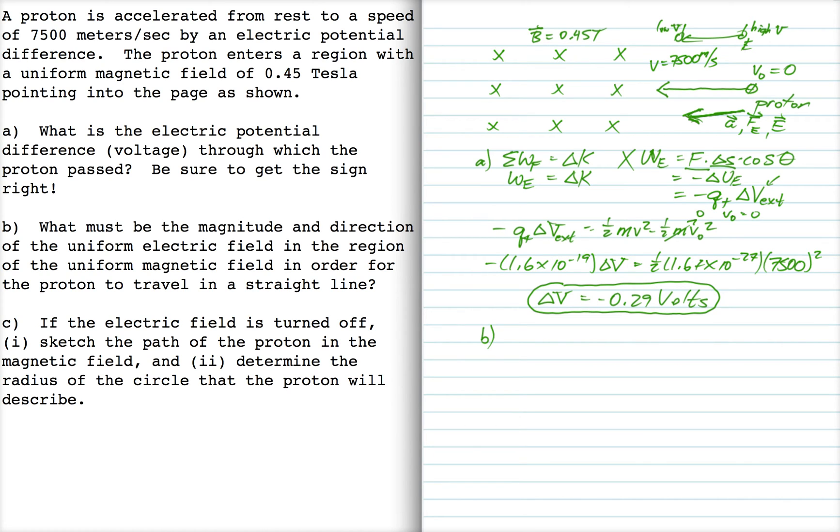Now for part B, let's see, so now we're going to consider this region. Now in this region, we have a different uniform electric field that is enabling this proton to continue through in a straight line.